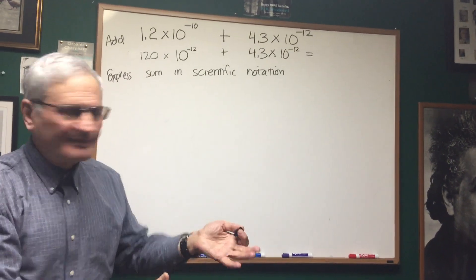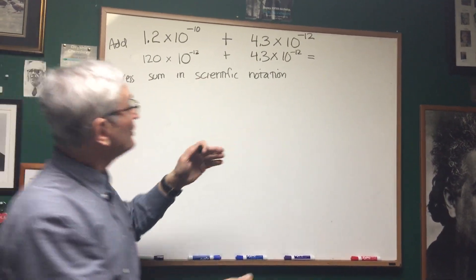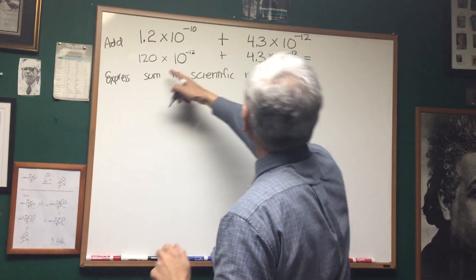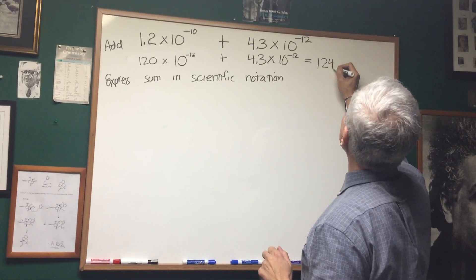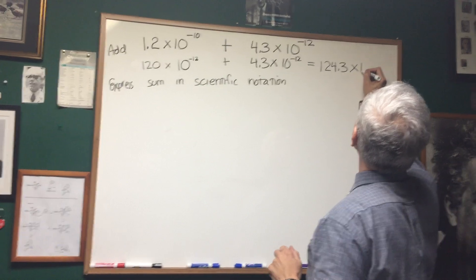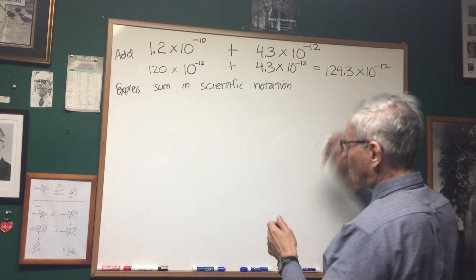Now that the two powers of 10 are equal to each other, we can just add them up. 120 plus 4.3 is 124.3 times 10 to the negative 12th.